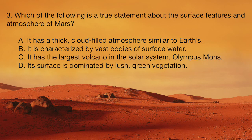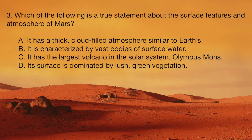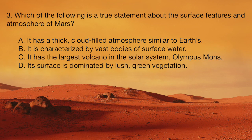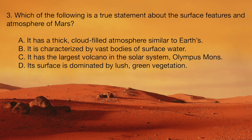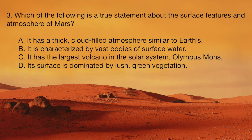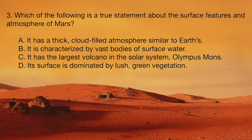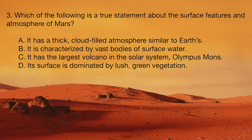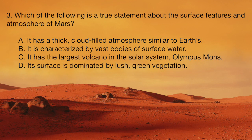Question 3. Which of the following is a true statement about the surface features and atmosphere of Mars? A. It has a thick, cloud-filled atmosphere similar to Earth's. B. It is characterized by vast bodies of surface water. C. It has the largest volcano in the solar system, Olympus Mons. Or D. Its surface is dominated by lush, green vegetation.